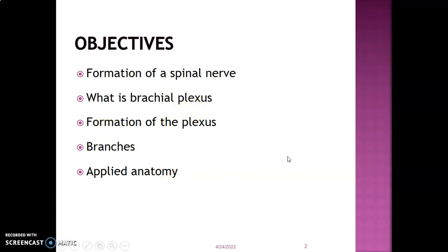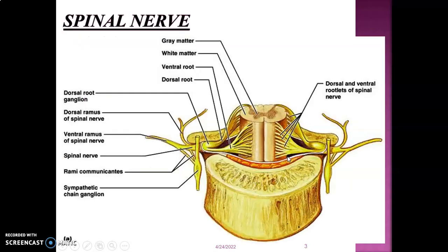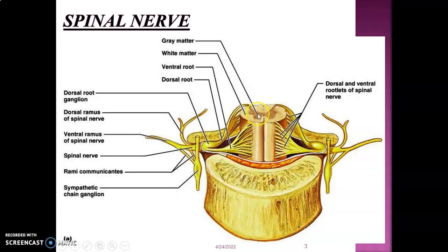This is the spinal cord. It's housed within the vertebral canal and has an outer white matter containing myelinated axons and an inner gray matter containing a collection of neuronal cell bodies. The gray matter is divided into the anterior horn and the posterior horn.